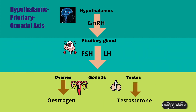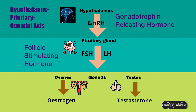The hypothalamic pituitary gonadal axis: the hypothalamus releases gonadotrophin-releasing hormone, or GNRH. GNRH triggers the pituitary to release either follicle-stimulating hormone or luteinizing hormone, and these in turn target the gonads. In men, FSH and LH stimulate testosterone production and testicular growth. And in women, they are part of the menstrual cycle and ovulation.